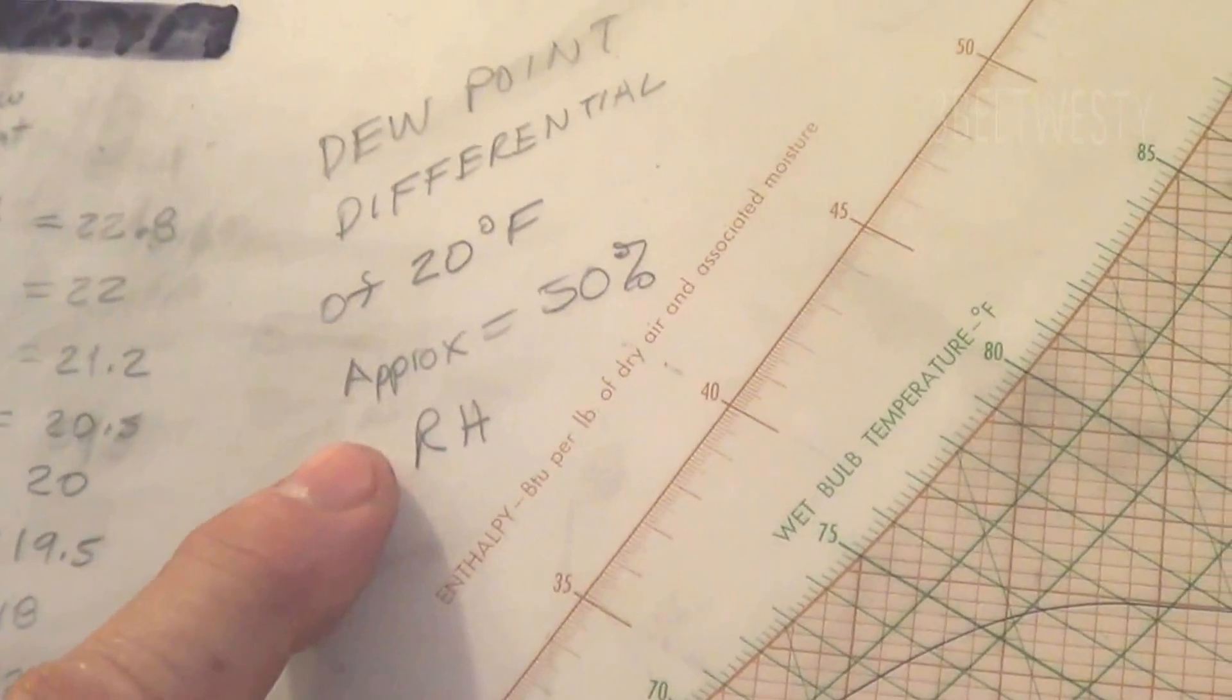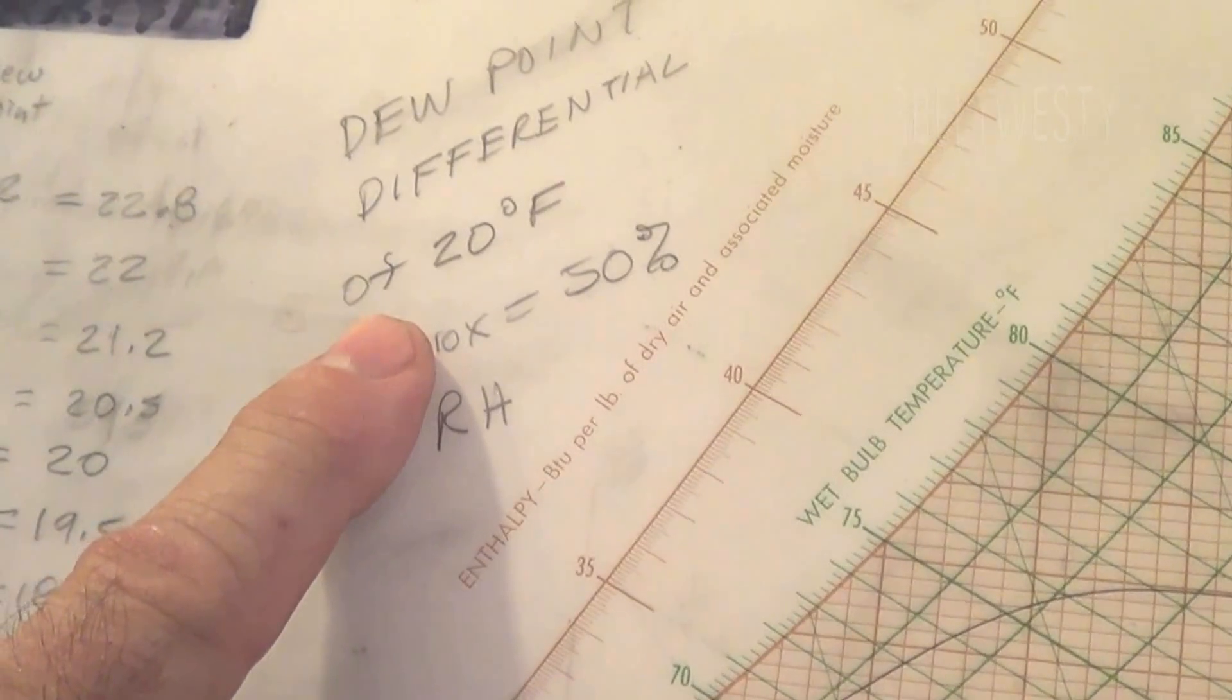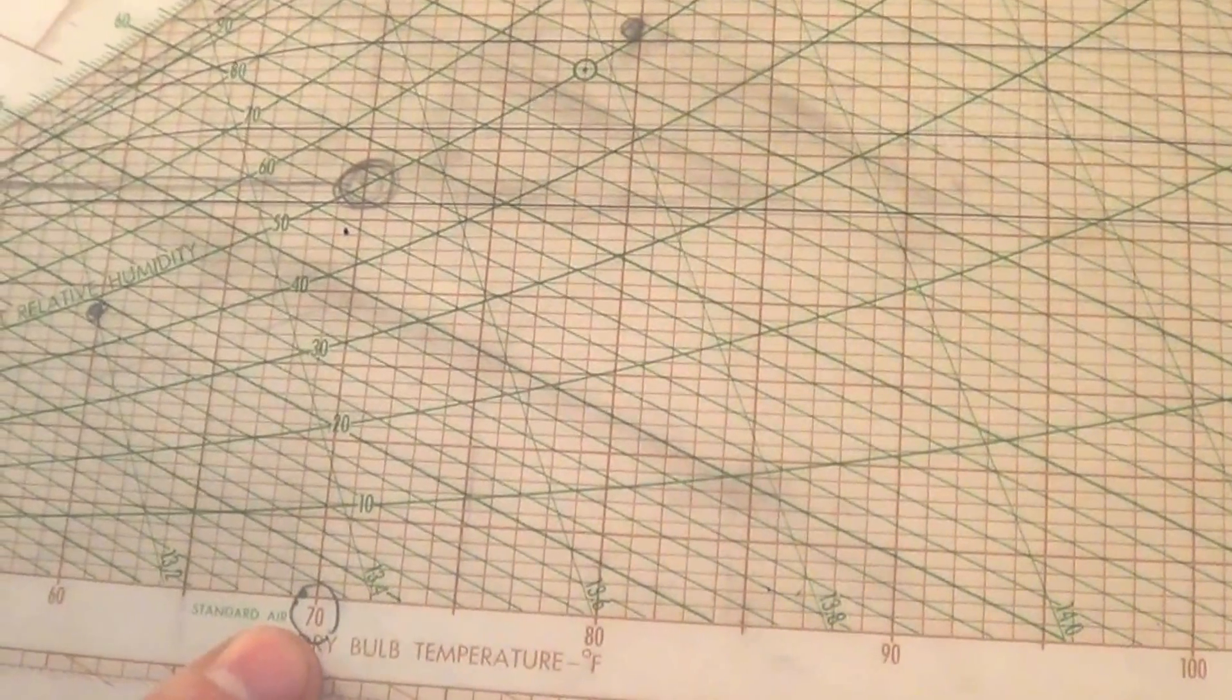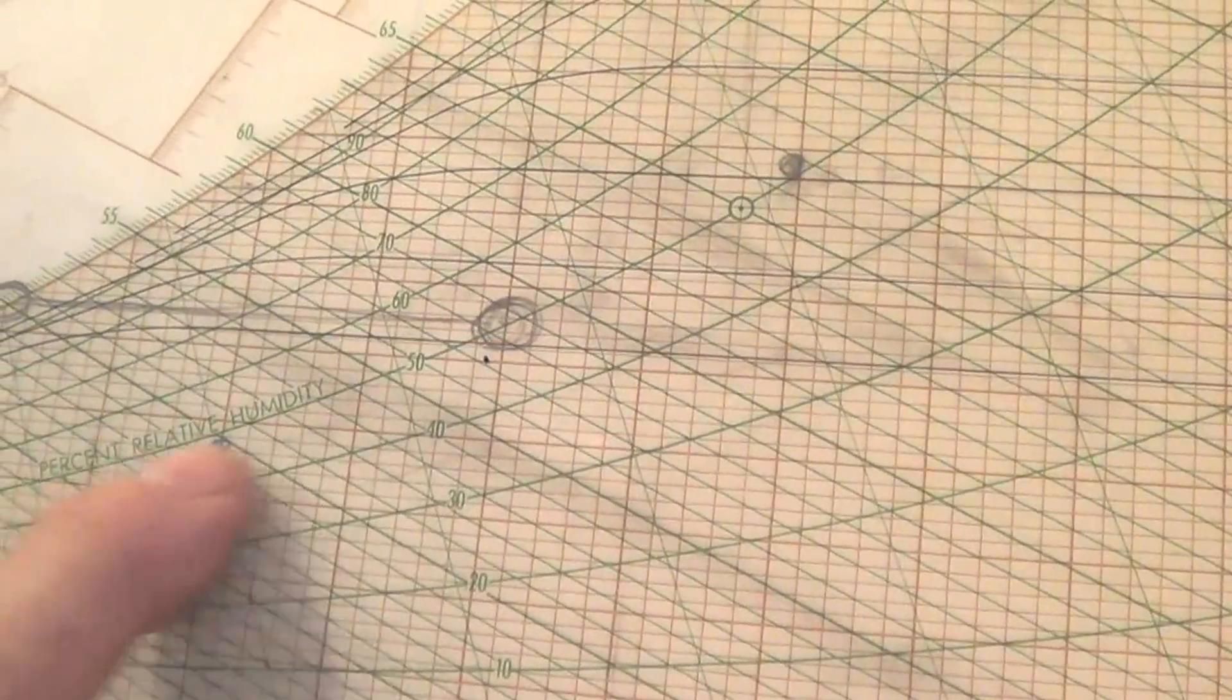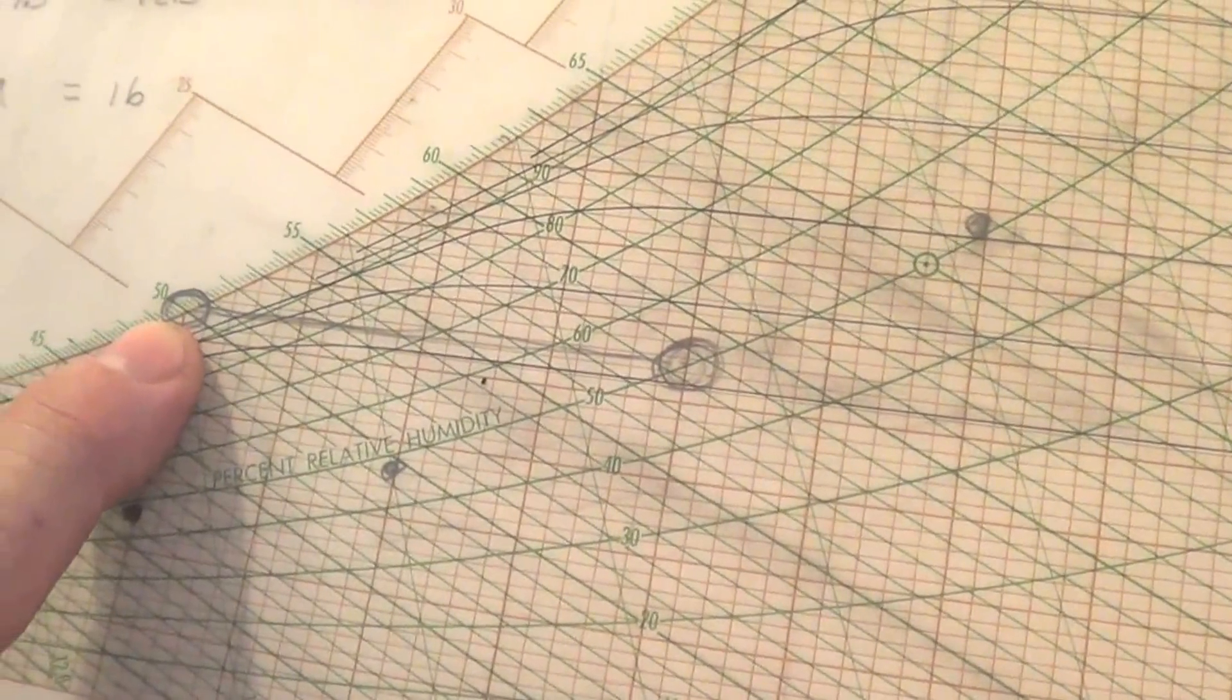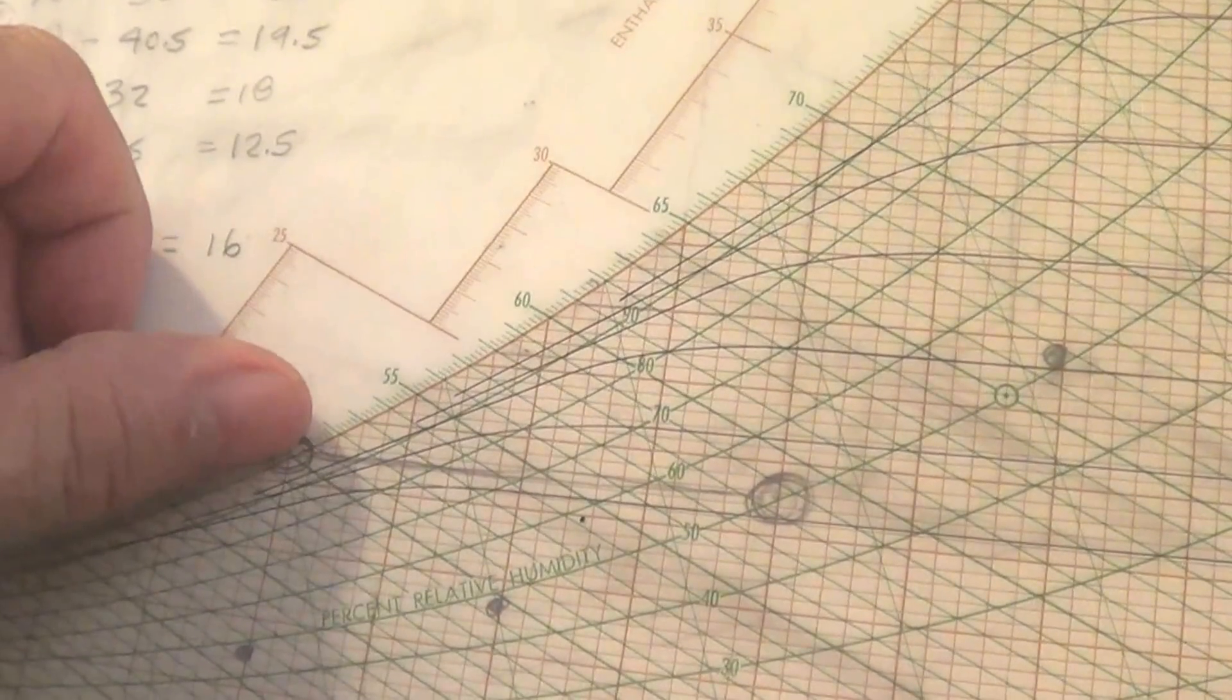Again, this is a dew point differential of 20 degrees between dry bulb and the dew point. If you take, say, 70 degrees here, you go up to the 50% relative humidity line and then you cool this air off. The dew point is 50 degrees here. It's also the wet bulb temperature at saturation.